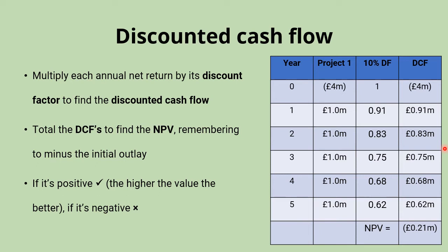With project one, we've totaled up the discounted cash flows and minused the initial investment cost of four million pounds, and that's given us a net present value of minus 0.21 million pounds. So that would suggest that this is not a project we should go ahead with, based on that 10 percent discount factor.